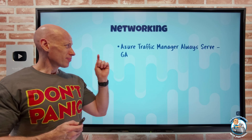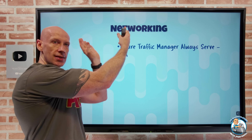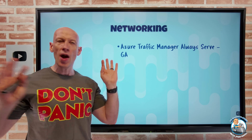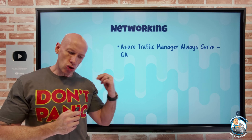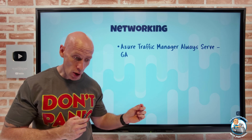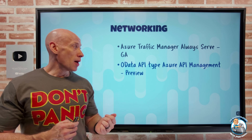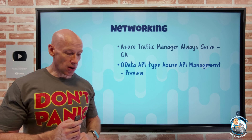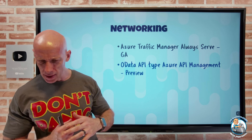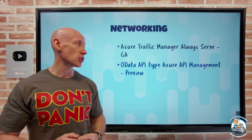On the networking side, Azure Traffic Manager's Always Serve feature has gone GA. Traffic Manager provides global DNS resolution that returns records based on routing methods like performance. Always Serve lets you disable health probes and always serve traffic to a given endpoint, or alternatively use a third-party health check to determine endpoint health. For Azure API Management, it now supports the OData API type — the Open Data Protocol defines best practices for building and consuming REST APIs, describing both data and the data model.